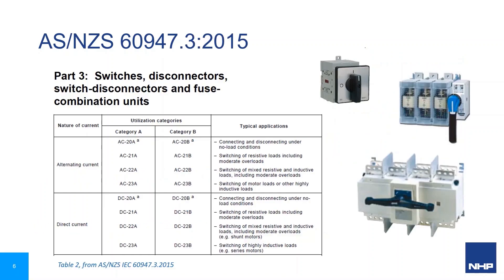The product standard for switch disconnectors, load break switches, and fuse switches is IEC 60947 part 3, and defines their utilisation categories for the switching function of different load types. Category A is for frequent operation, whilst Category B is used where the switching is infrequent or only occasionally required.